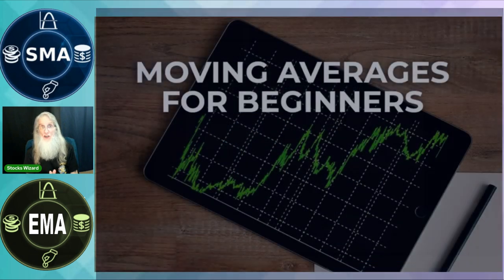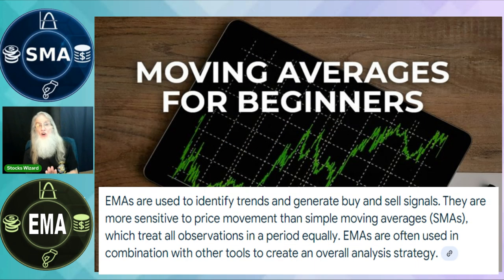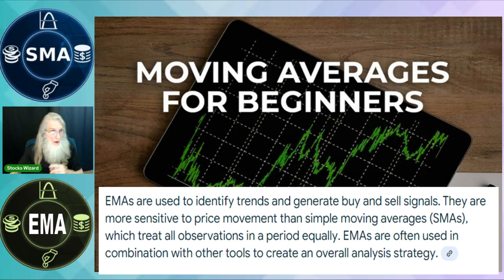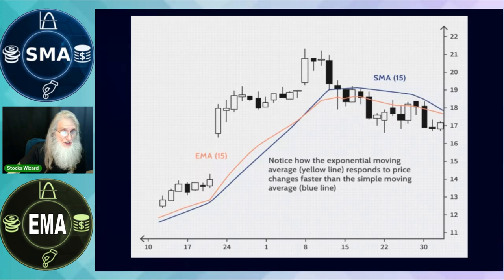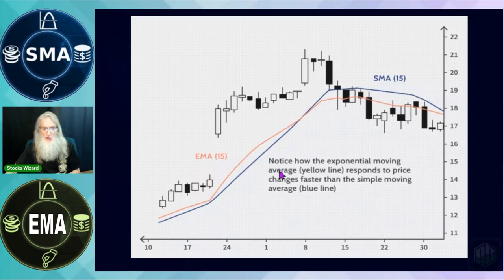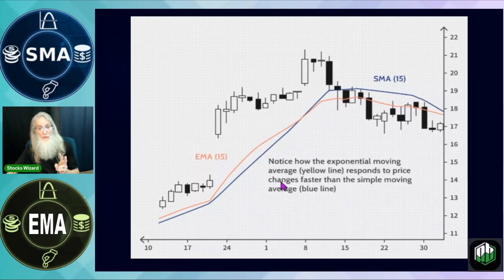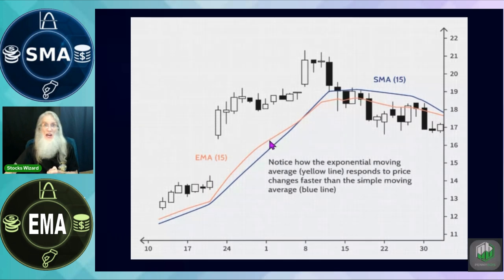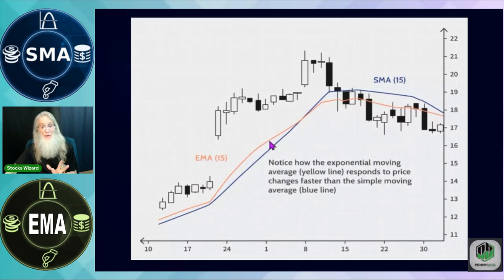What is an exponential moving average? It's the same thing as a simple moving average with one difference — it puts more weight, more credence, on current prices. So you end up with an EMA that is more responsive. I've got an example here: we have a simple moving average — the blue one — and an exponential moving average — the orange one.